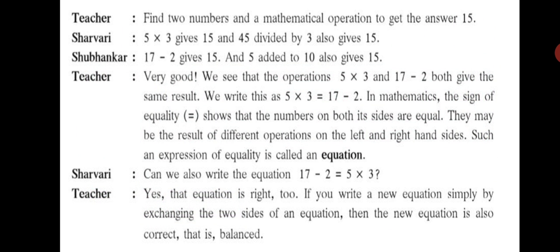Find two numbers and a mathematical operation to get the answer 15. Sharvari says 5 into 3 gives 15 and 45 divided by 3 also gives 15. Shubhankar says 17 minus 2 gives 15 and 5 added to 10 also gives 15.